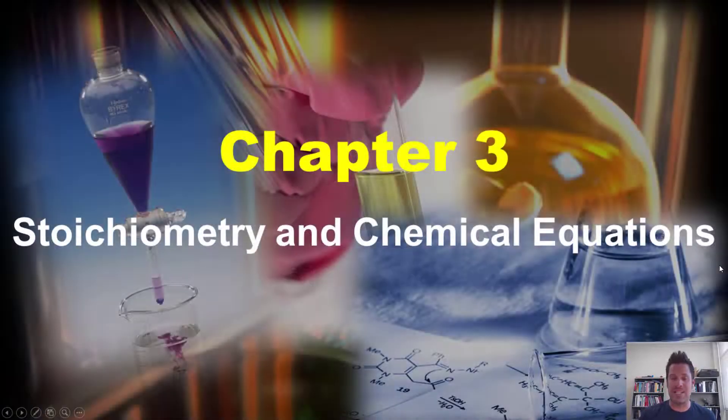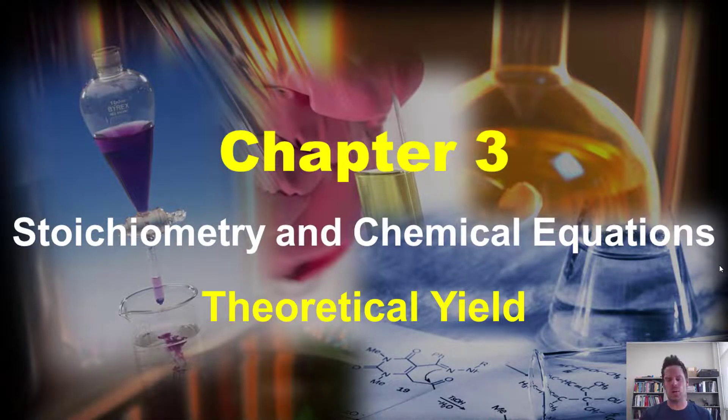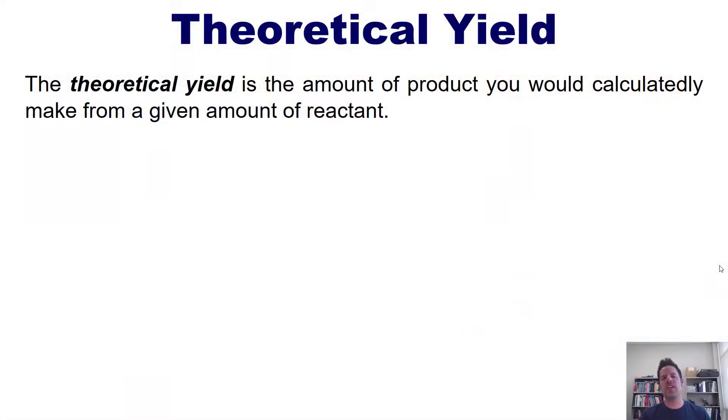In this chapter 3 video on stoichiometry and chemical equations, I will teach you theoretical yield. The theoretical yield is the amount of product that you would, by calculation, make from a given amount of reactant.